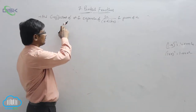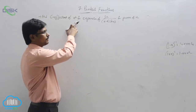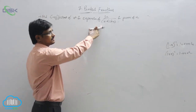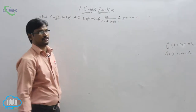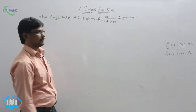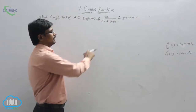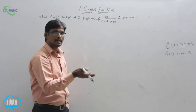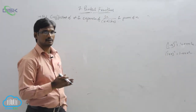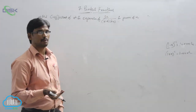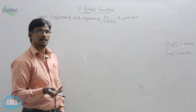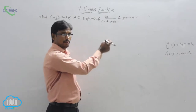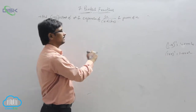We will find out the coefficient of x power 4 in the expansion of this fraction. These are the power series of this one. Now first, as usual, check whether it is a proper fraction or an improper fraction, then convert into partial fractions method.